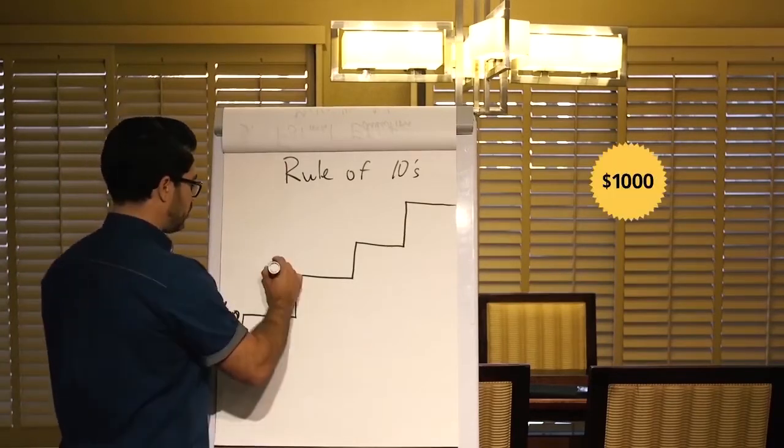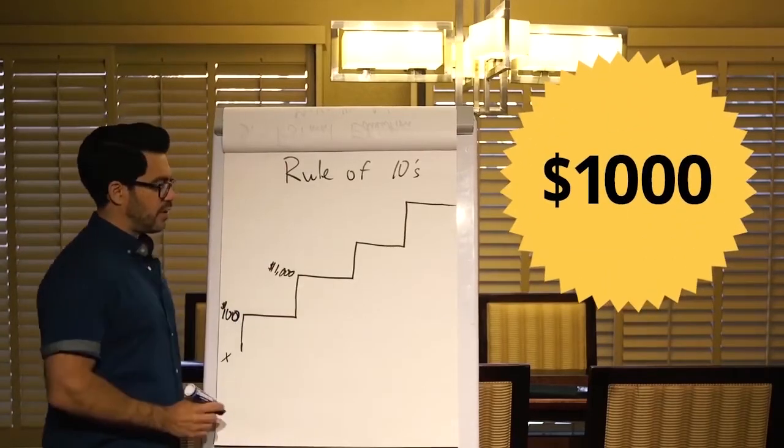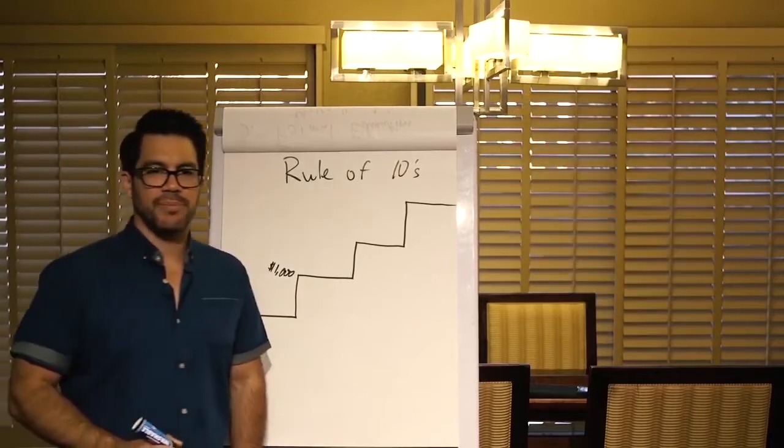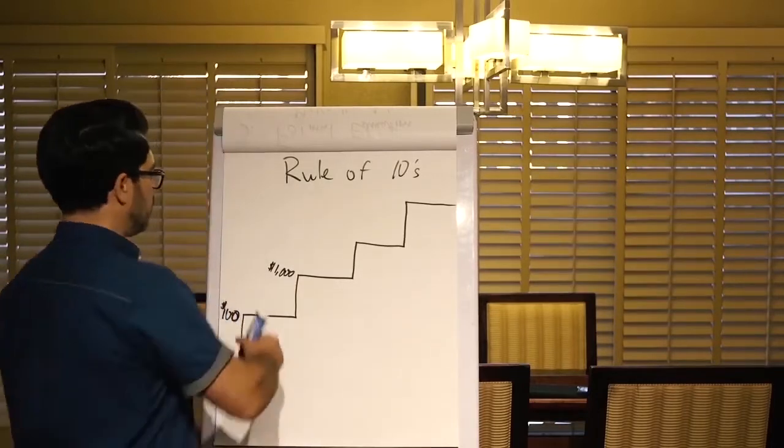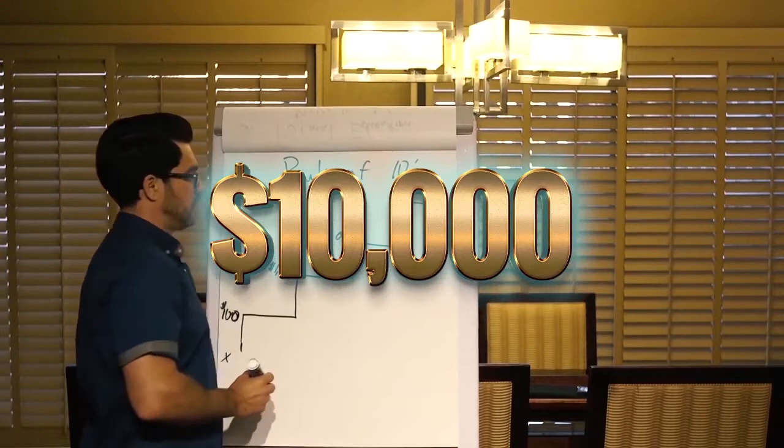From there, what's 10 times a hundred? Thousand. So the next step, you got to figure out how to make a thousand bucks a month. You can do that part-time. That won't take a full-time job. Now what's 10 times this? 10,000. That's the next stage.